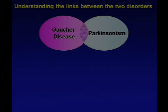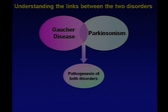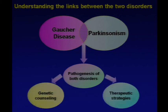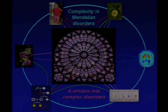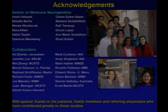Understanding the links between these two disorders is very rewarding and frustrating, but I think it will ultimately teach us about the pathogenesis of both disorders, leading to improved genetic counseling and better therapeutic strategies. I hope you can appreciate that the complexity we're seeing in Mendelian disorders like Gaucher disease may ultimately give us a nice window into other complex disorders. I want to acknowledge my group who's done all the work, many close collaborators at NIH and around the world, and special thanks to the patients, family members, and referring physicians who have contributed so much to these studies. Thank you.